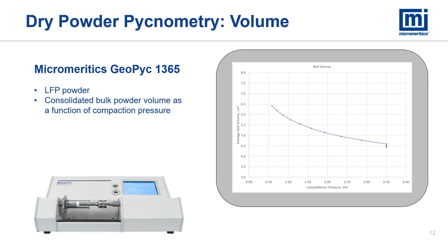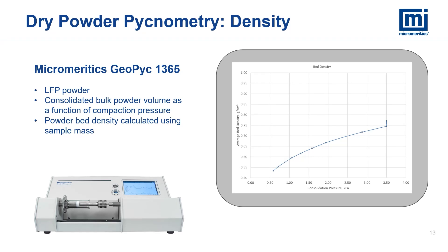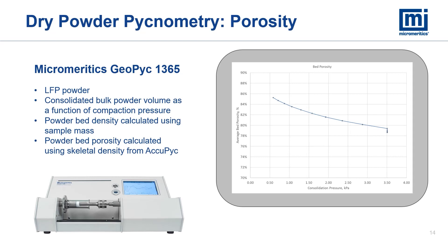We characterized the original LFP powder using the TAP option. Bed volumes were determined over a range of compacted pressures from about 0.5 to 3.5 kilopascal. Using the sample mass under test, we calculated a compacted powder bed density for each measured bed volume as a function of compaction pressure. By utilizing the skeletal density determined using the ACUPIC, we can determine the compacted bed porosity as a function of applied pressure. Note that this porosity can be used to predict the quantity of electrolyte needed when using the LFP for lithium ion battery electrodes.